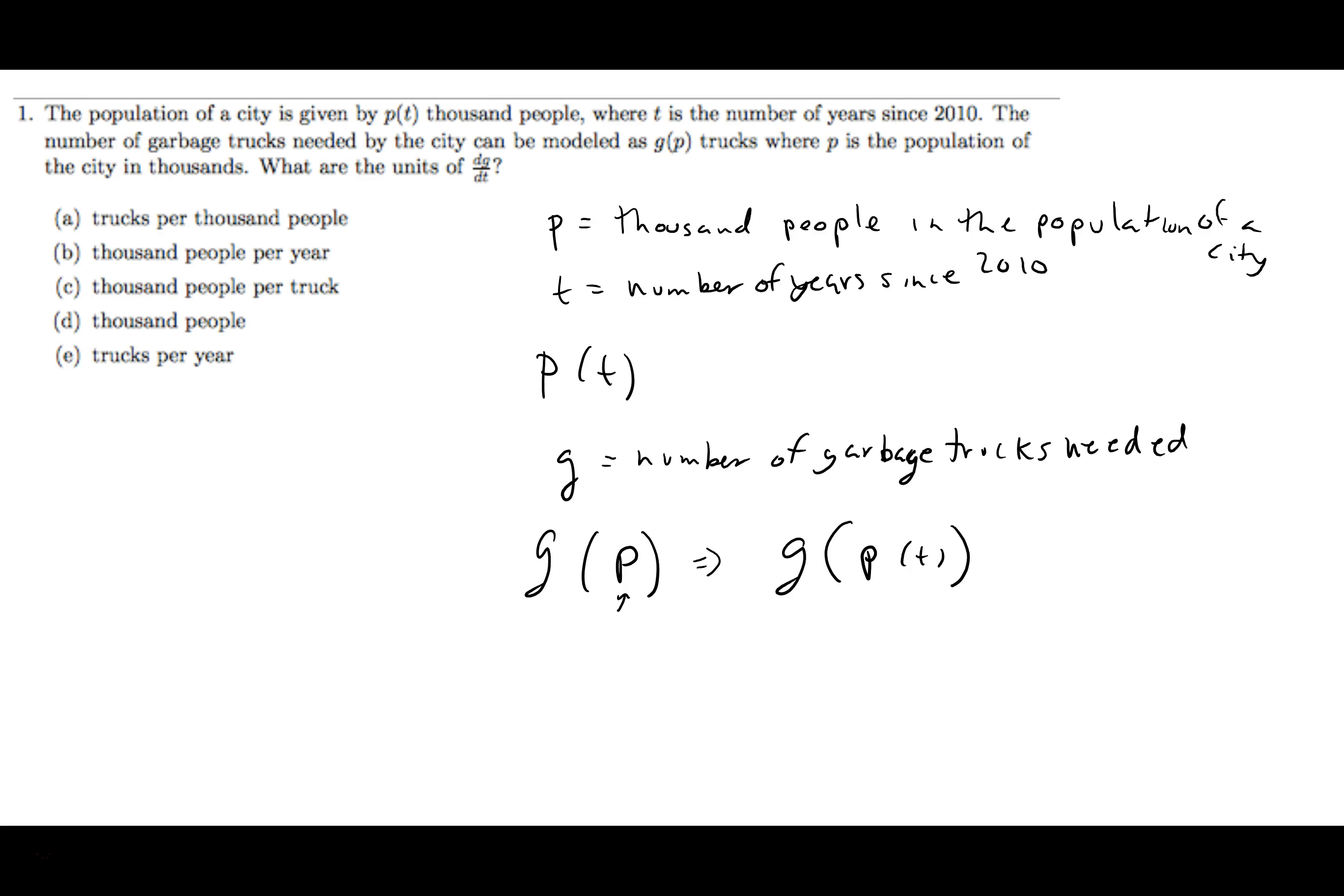And so they're asking us what are the units of dG/dt? The derivative of this dG/dt. If you want the units of that, what you do is just put the units of G divided by the units of T. And so the number of garbage trucks per year since 2010, trucks per year since 2010 to be precise, garbage trucks to be precise. And so trucks per year would be the answer to that question.